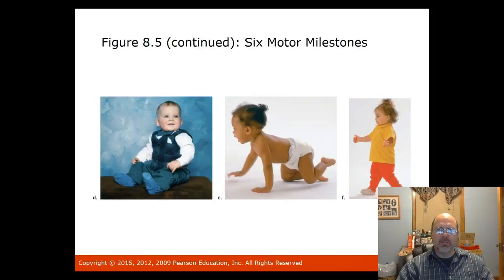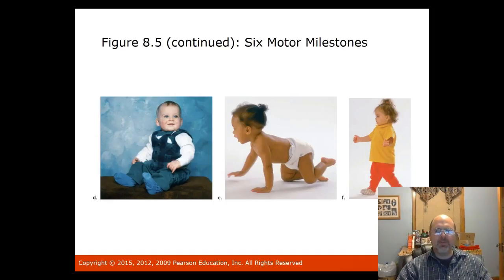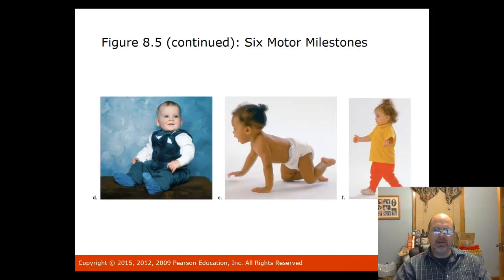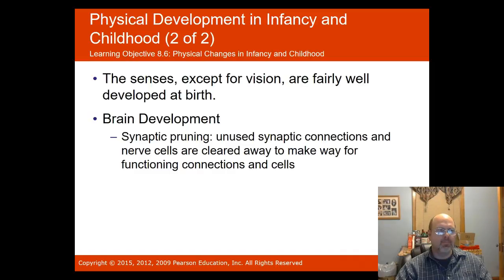Additional milestones include sitting up without support at six to seven months, crawling at seven to eight months, and walking between eight and eighteen months. These motor milestones develop as the infant gains greater voluntary control over muscles, typically from the top of the body downward — seen in early control of neck muscles and much later development of control of limbs and feet.